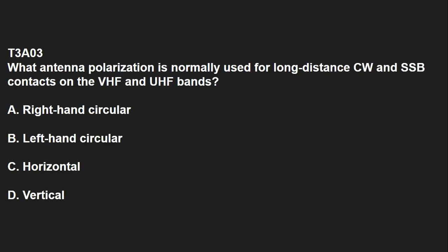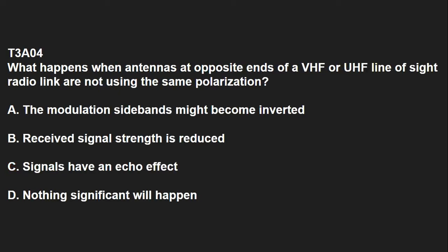T3A03: What antenna polarization is normally used for long-distance CW and SSB contacts on the VHF and UHF bands? It is horizontal polarization. T3A04: What happens when antennas at opposite ends of a VHF or UHF line-of-sight radio link are not using the same polarization? Answer is received signal strength is reduced.